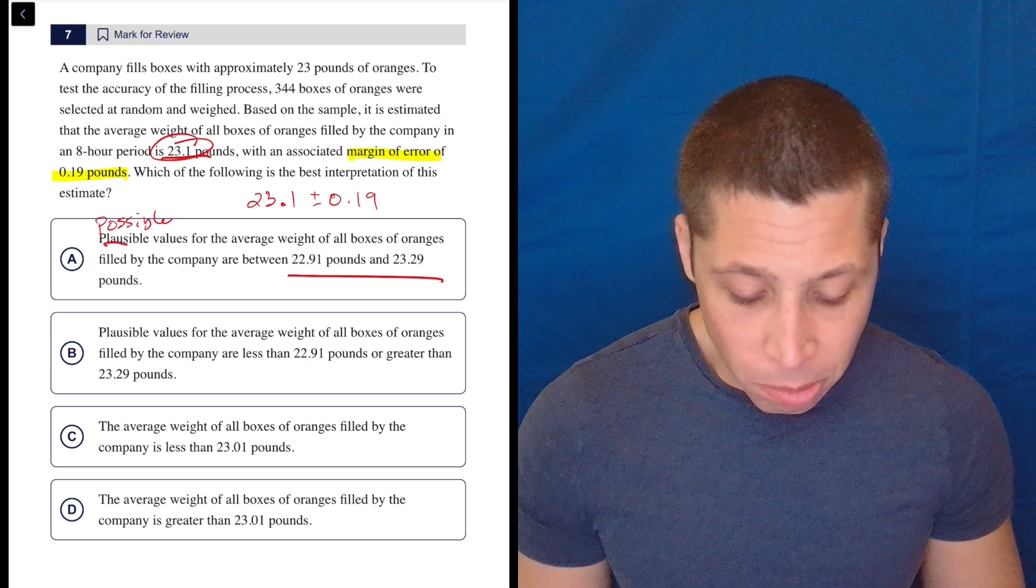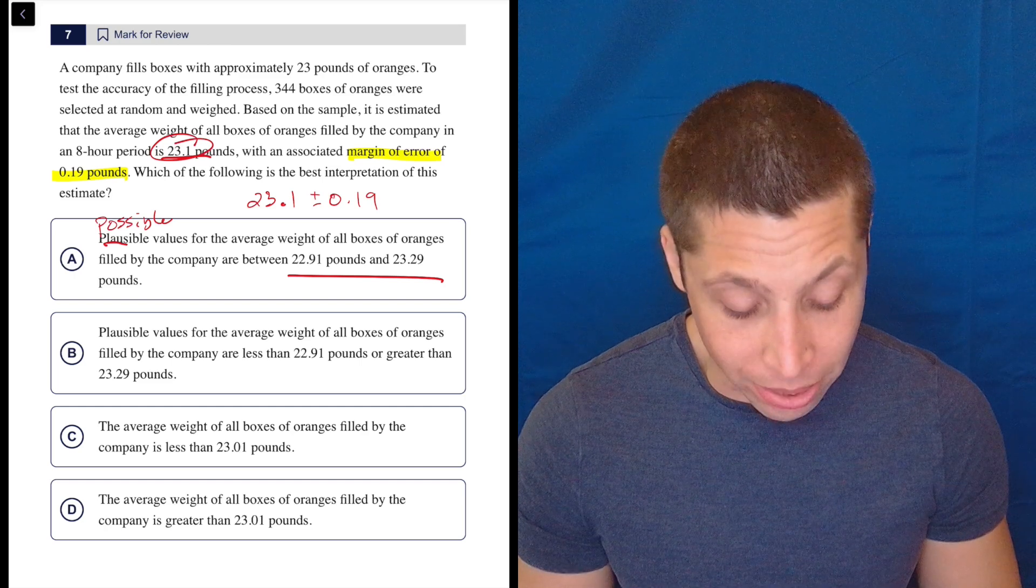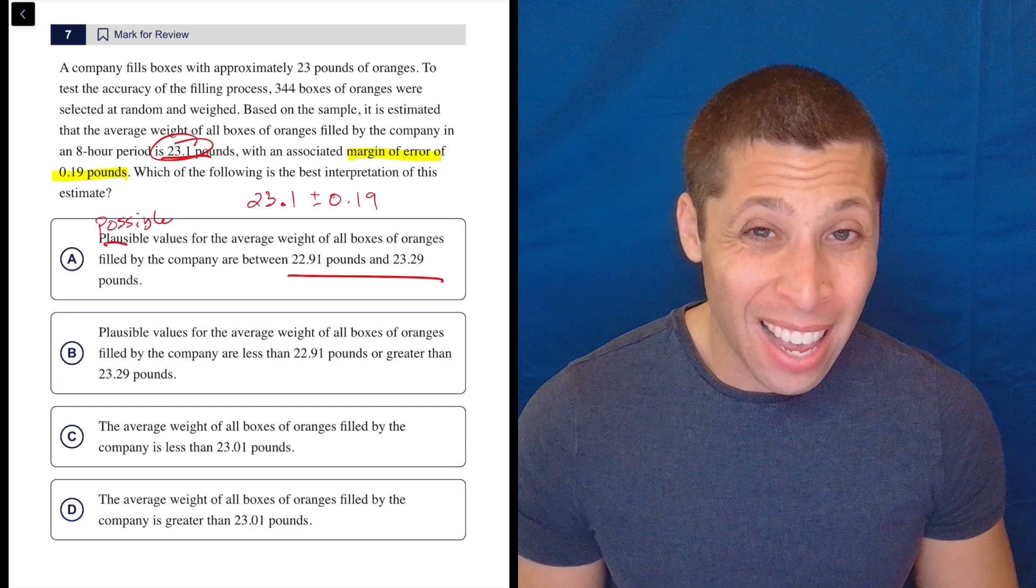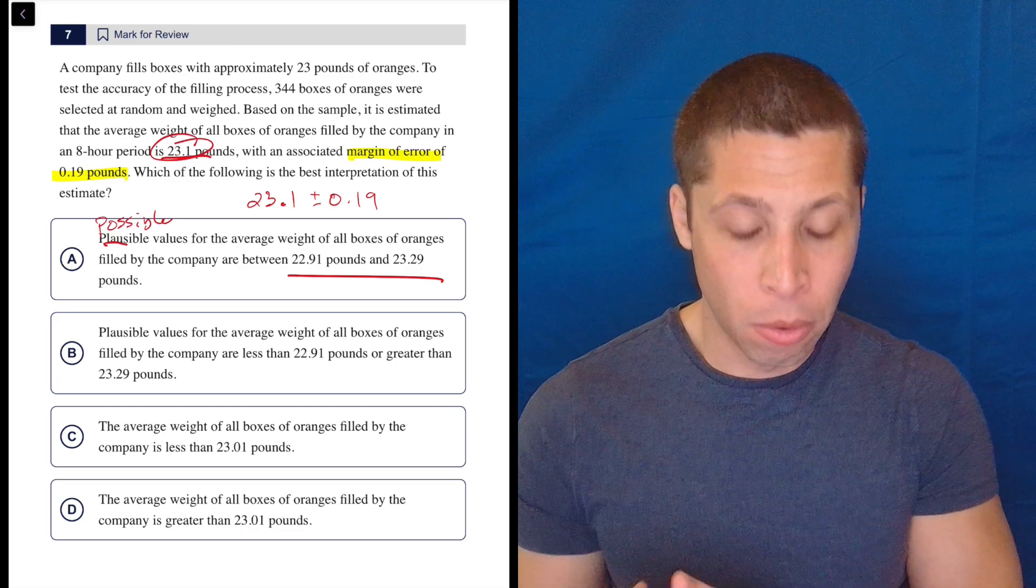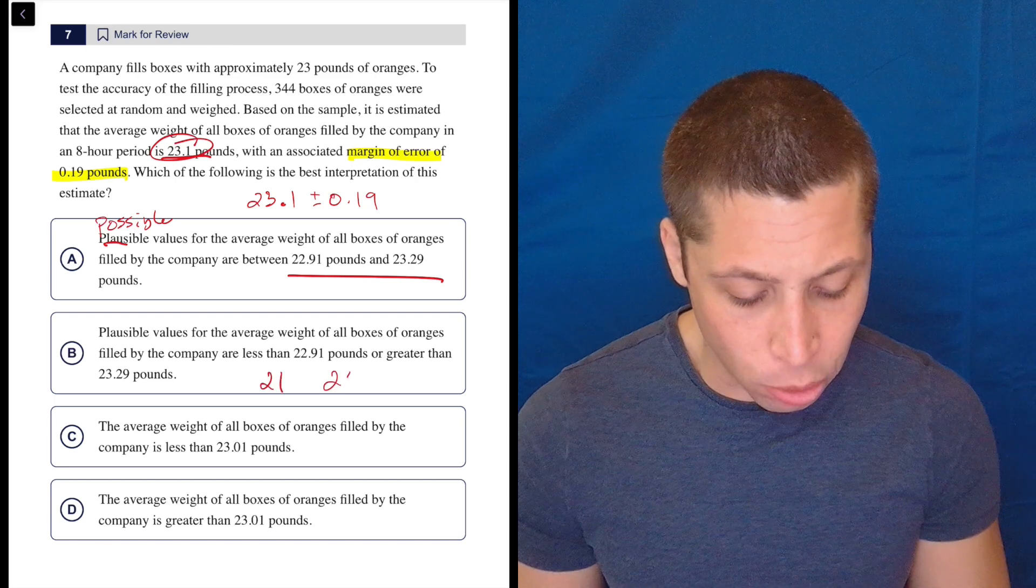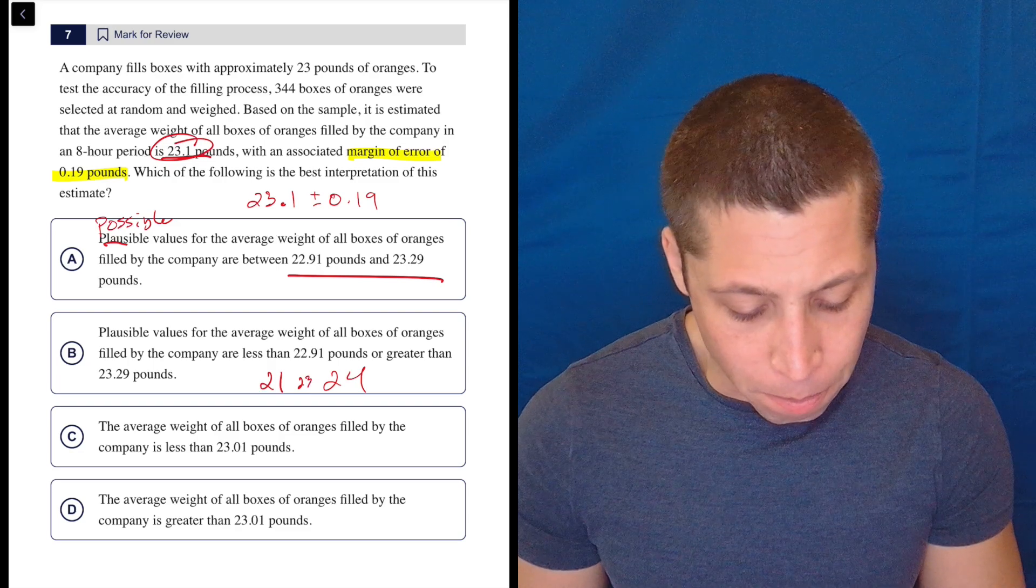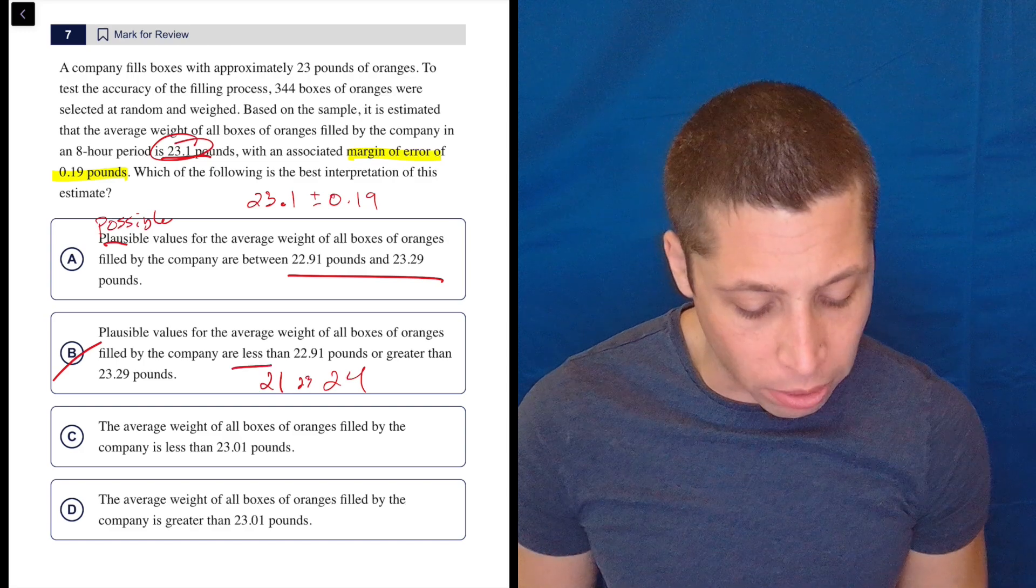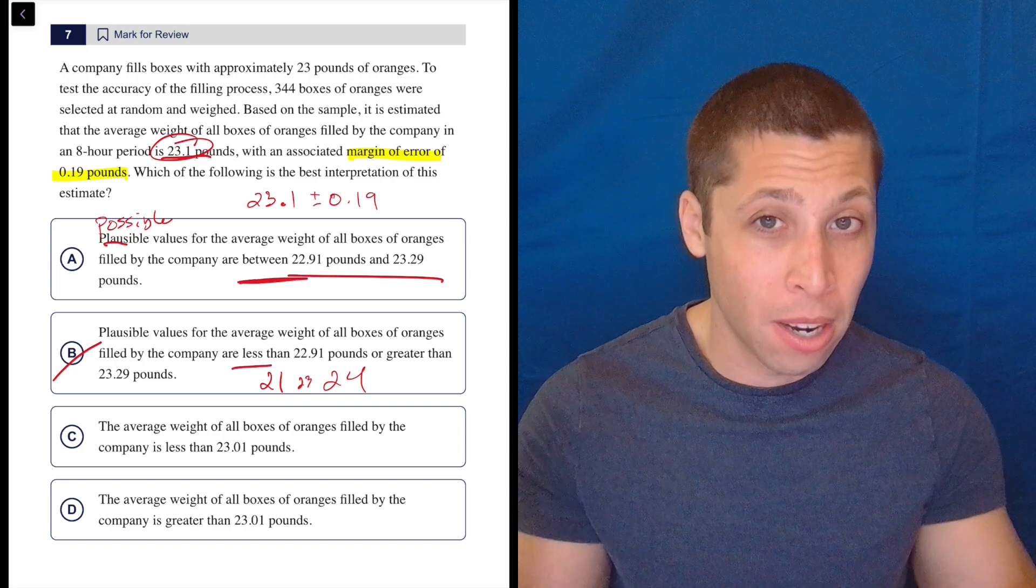But let's look at B. Plausible values for the average weight of all boxes of oranges filled by the company are less than 22.91 pounds or greater than 23.29. So that's saying it's not even in the range. It's outside of the range, right? Less than 22 would be saying something like 21 and greater than 23 would be something like 24. But if our average is something like 23, then we would want to be within that, right? We want to be close to 23, not further from it. So this is getting the ordering wrong. We want it to be between those things, right? Plus or minus means we're still close.